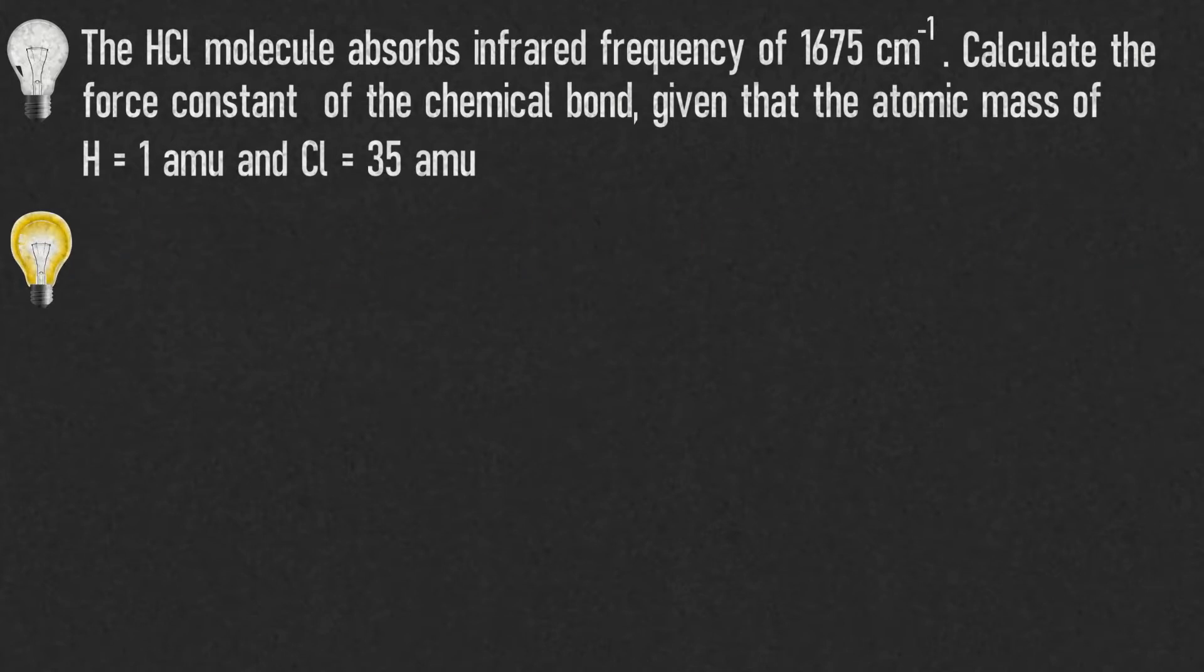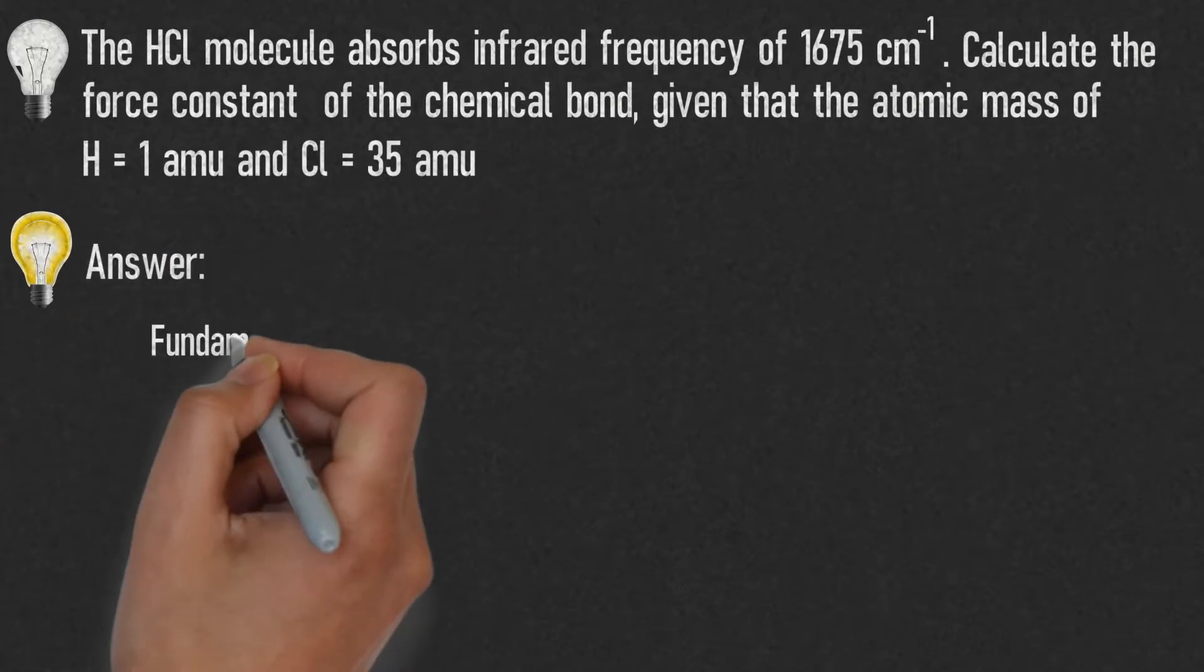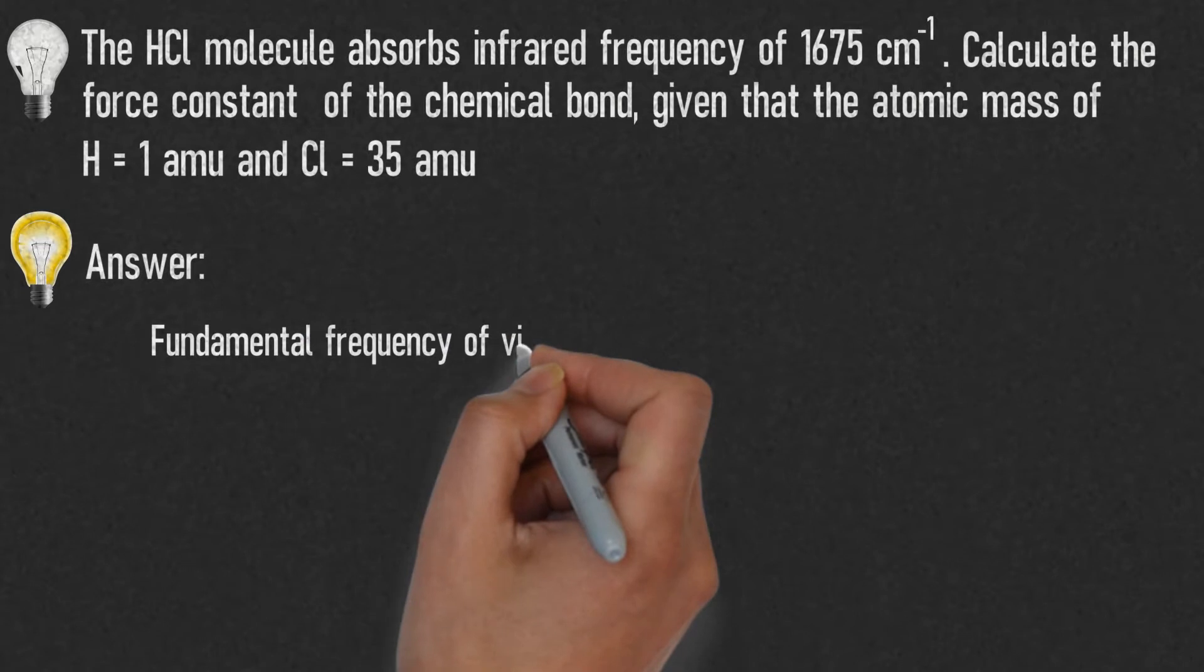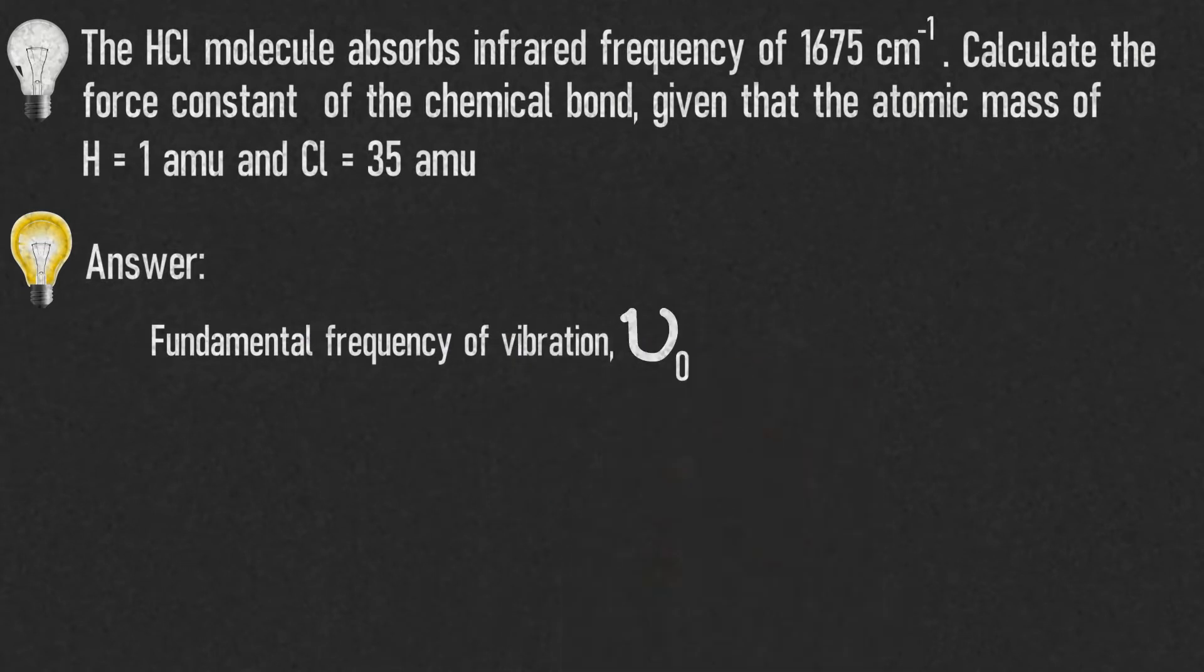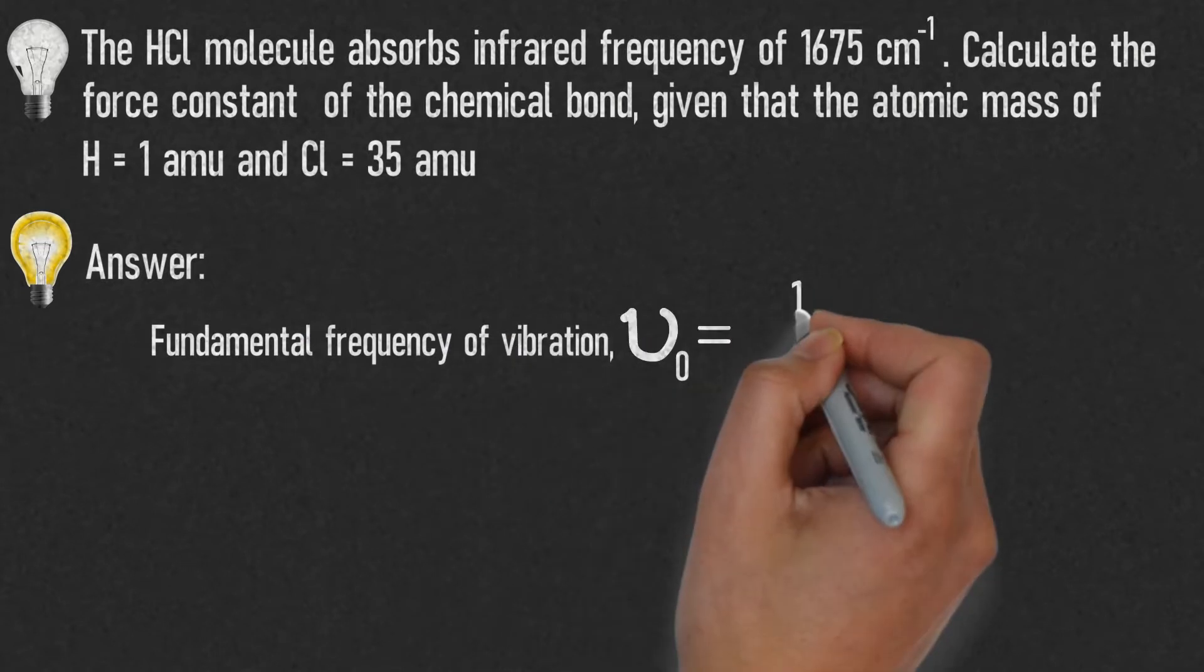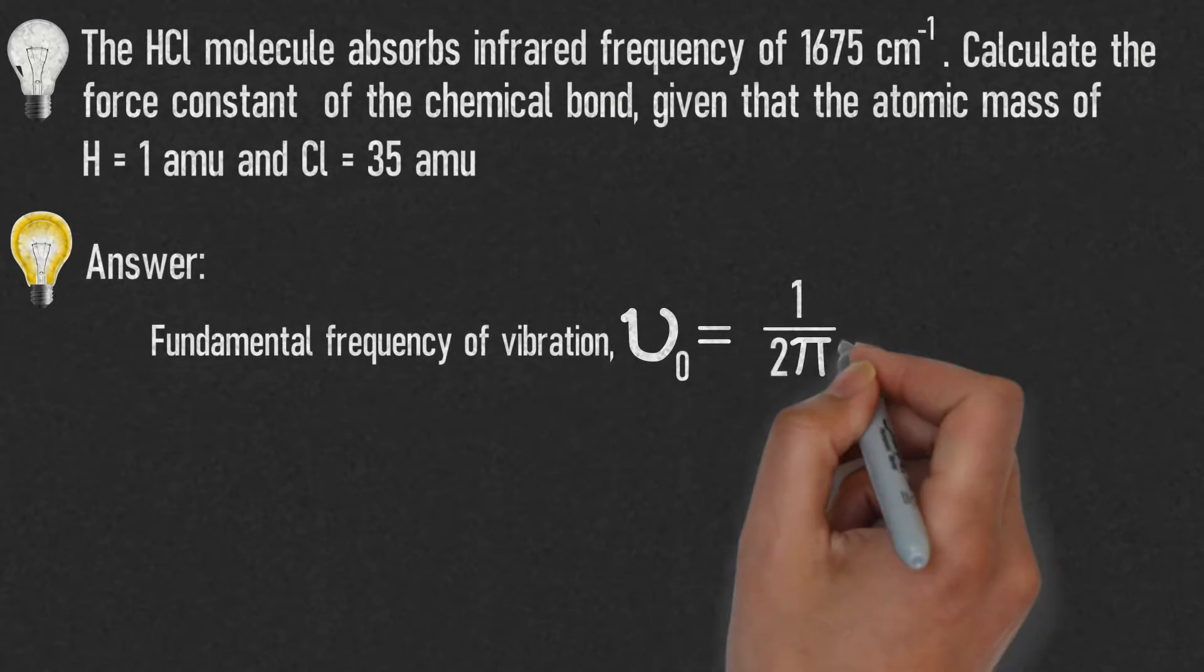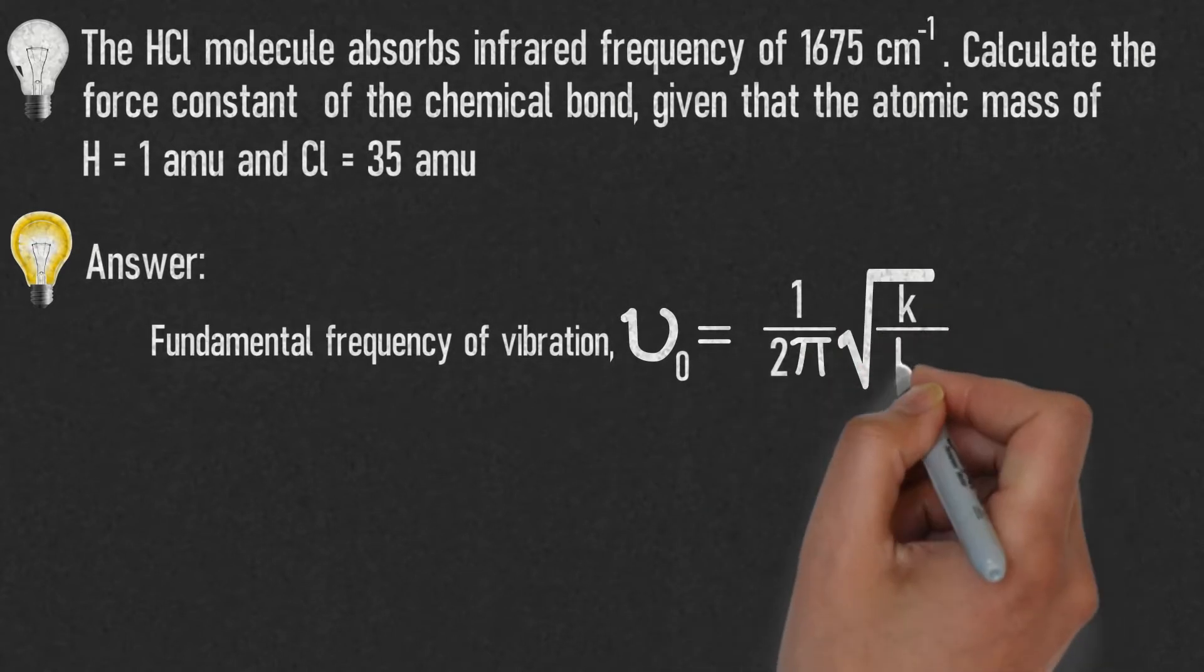Let us find the answer for this question. The fundamental frequency of vibration of a molecule is given by the formula ν₀ = 1/(2π) × √(k/μ).